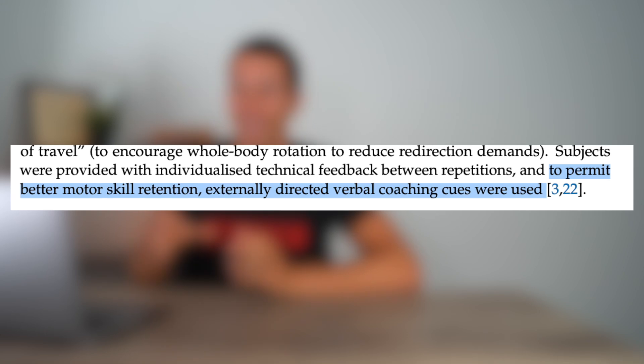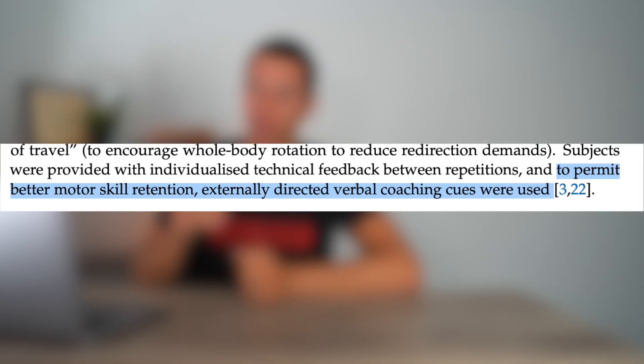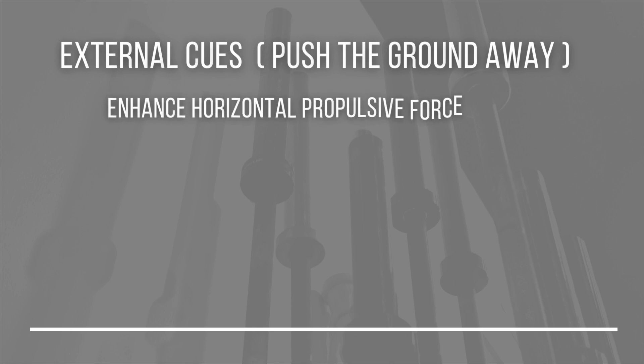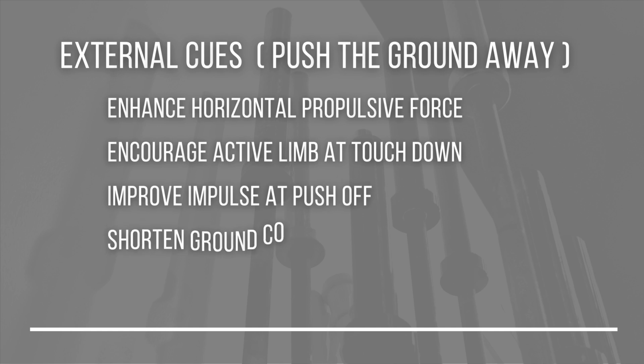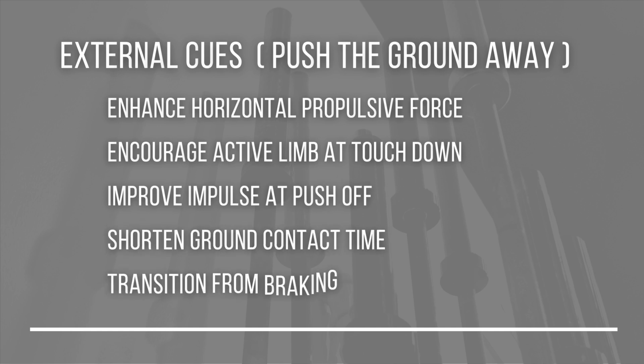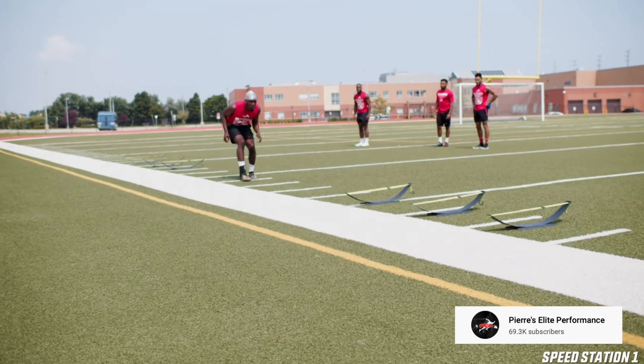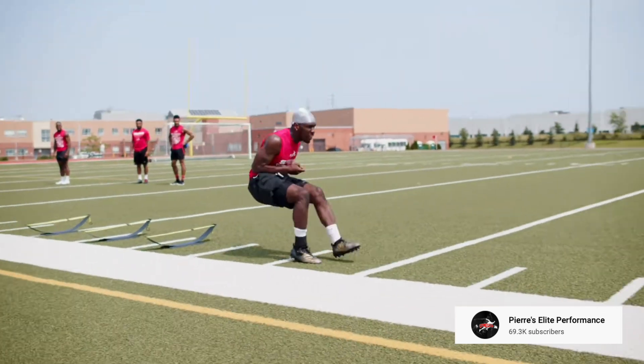Specifically, the research article stated that to permit better motor skill retention, externally directed verbal coaching cues were used. This was demonstrated to enhance horizontal propulsive force, encourage active limb at touchdown, improve impulse at push-off, shorten ground contact time, and more rapidly transition from braking to propulsion. Providing the cue to cushion the landing makes you more active in your limb, allowing more rapid force absorption — which helps you transition from braking to propulsive force as the athlete is cued to push the ground away.